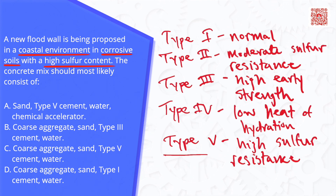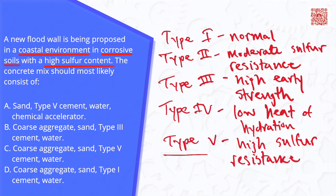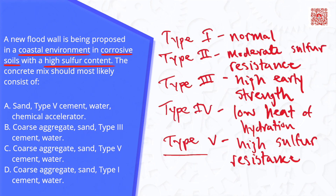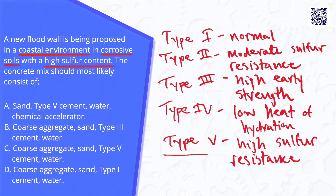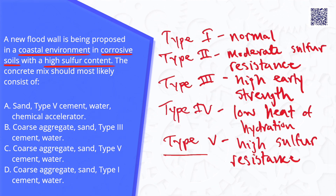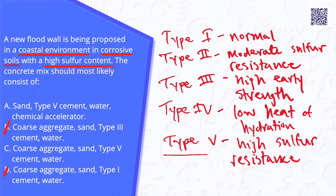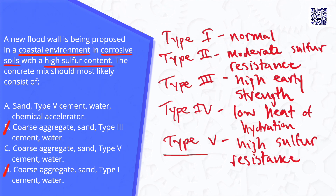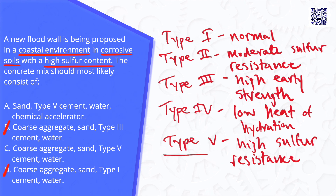Looking at the answer choices, we see that answer choices A and C both contain Type 5 cement. So let's eliminate answer choices B and D, which do not, and then further analyze answer choices A and C to see which is correct.